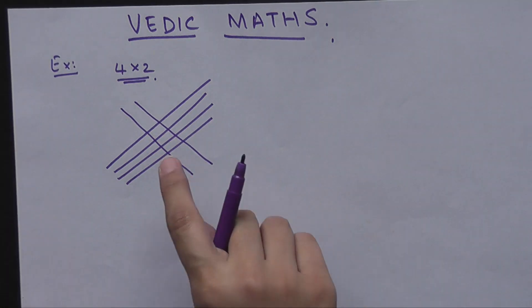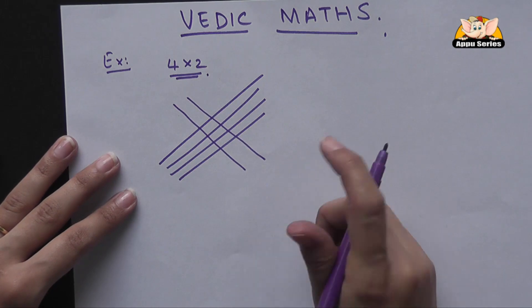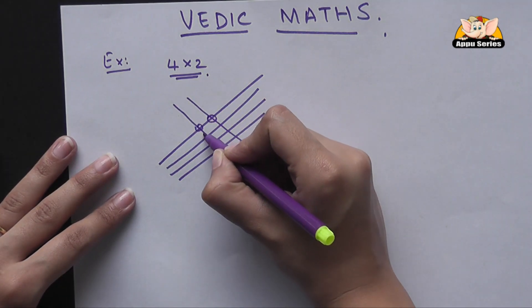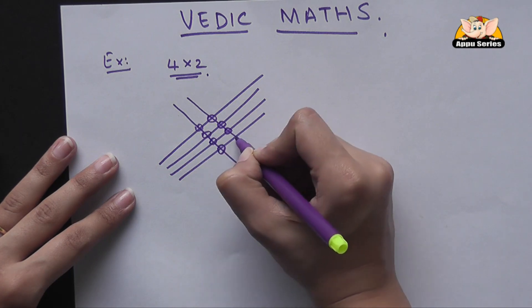Now all you have to do is count the number of intersecting points. So here we have 1, 2, 3, 4, 5, 6, 7, and 8.